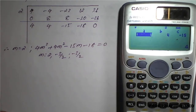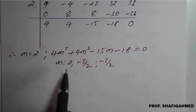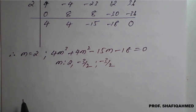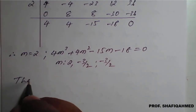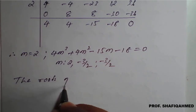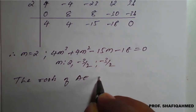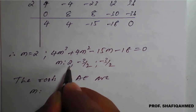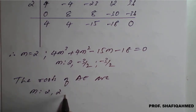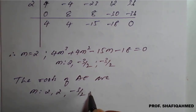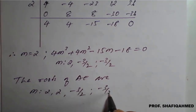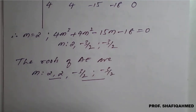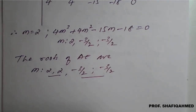The roots are in pairs — both repeated. Therefore, the roots of the auxiliary equation are m=2 and m=2 (repeated), and m=minus 3/2 and m=minus 3/2 (repeated). These are real and coincidental roots — two pairs.